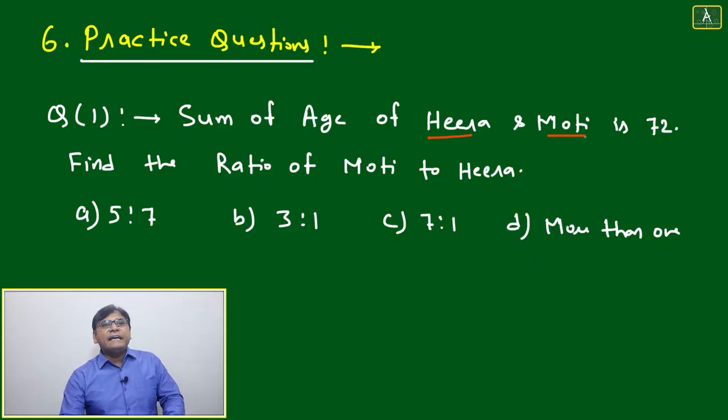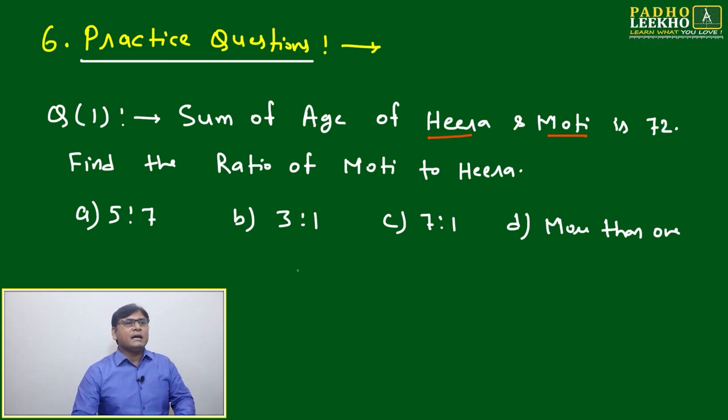Question number one states the sum of ages of Hira and Moti is 72. The unit is not given - it could be years, months, or something else. Find the ratio of Moti to Hira.